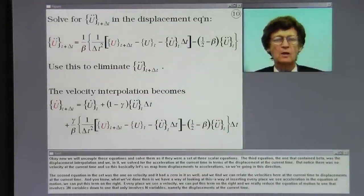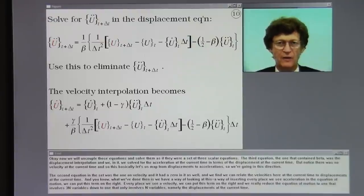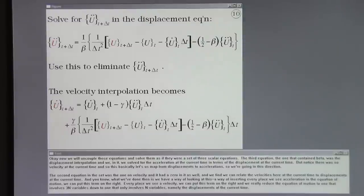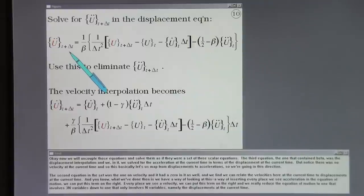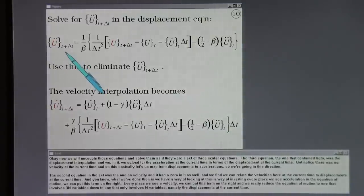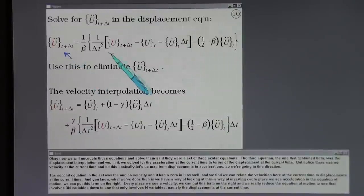Okay now we will uncouple those equations and solve them as if they were a set of three scalar equations. The third equation, the one that contained beta, was the displacement interpolation. In it, we solve for the acceleration at the current time in terms of the displacement at the current time. But notice there was no velocity at the current time. And so this basically lets us map from displacements to accelerations.